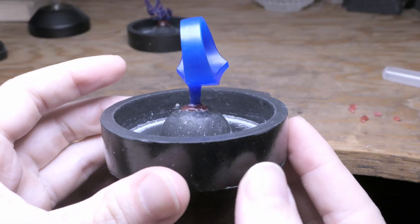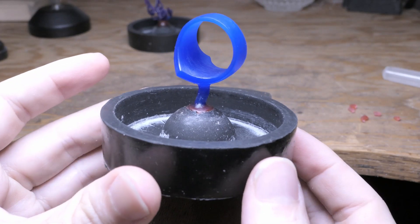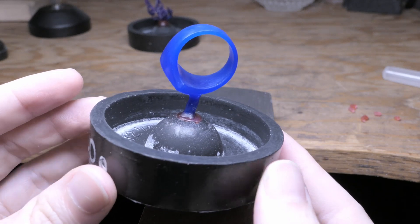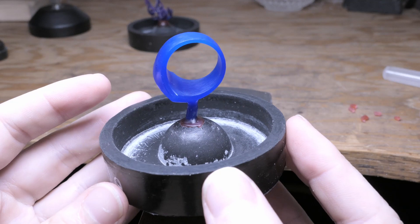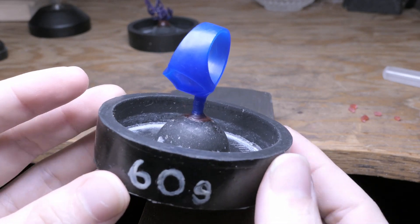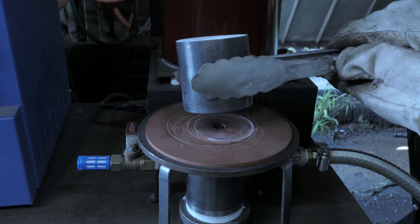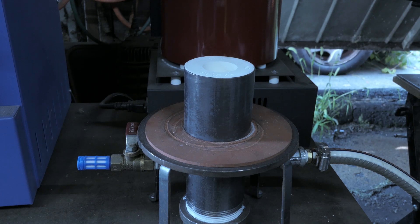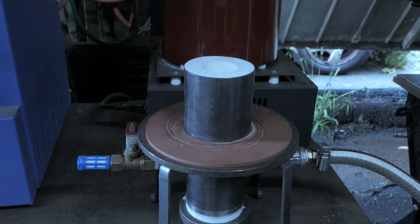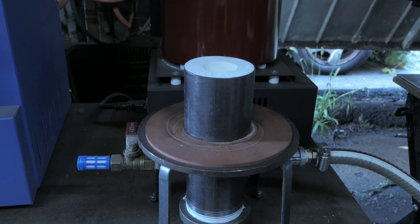And with these good to go, I went ahead and invested them in some SC20 R&R jewelry investment and put them in the kiln for a five-hour burnout cycle, ramping up to 1,350 degrees Fahrenheit before dropping down to casting temperature of 1,000 degrees.